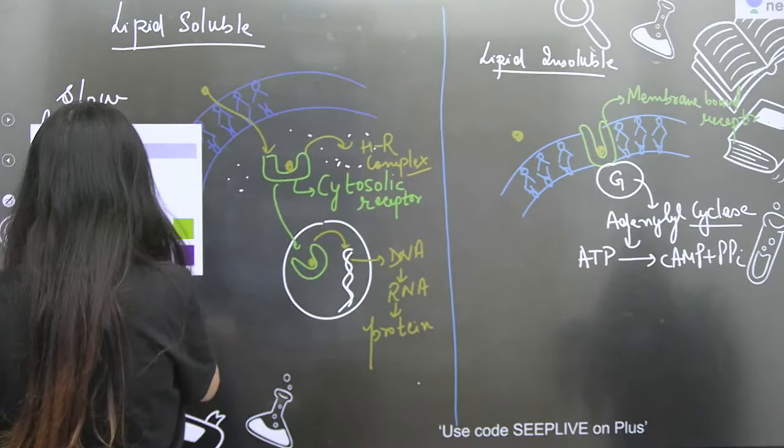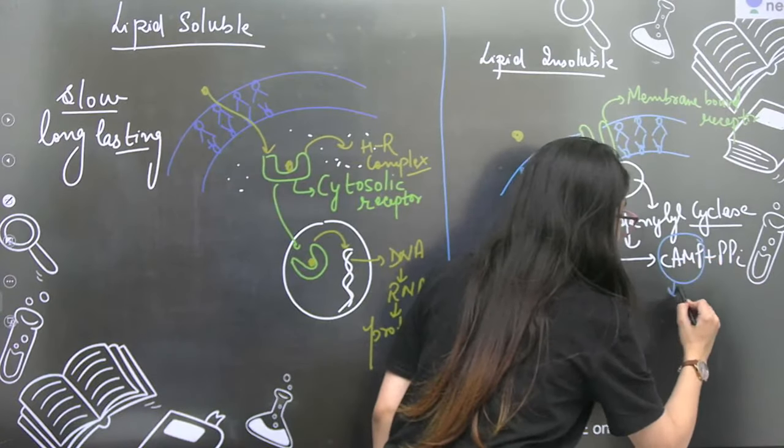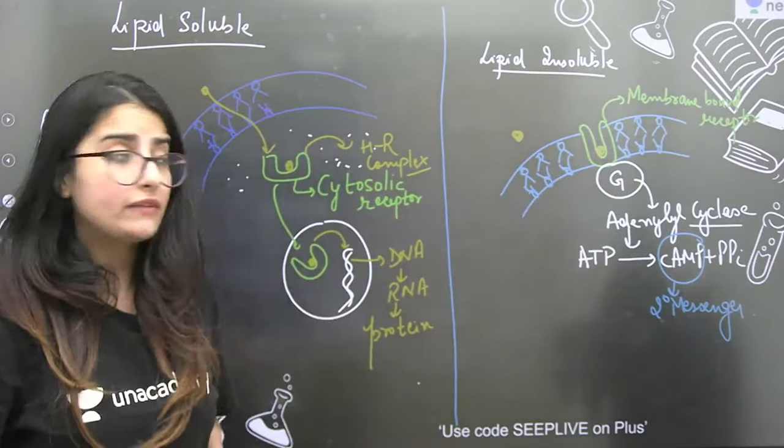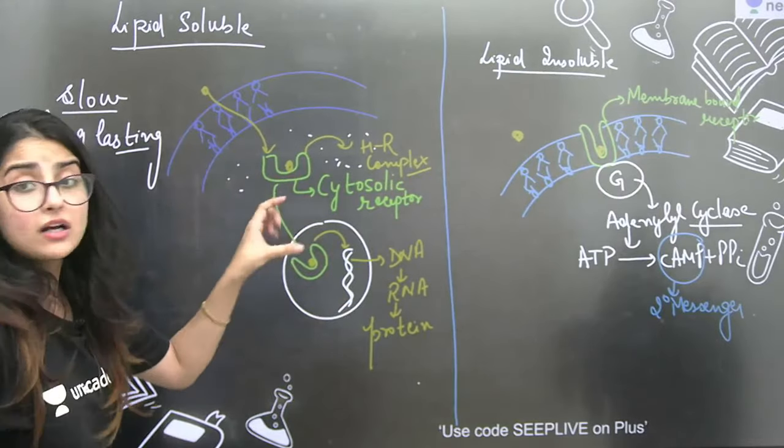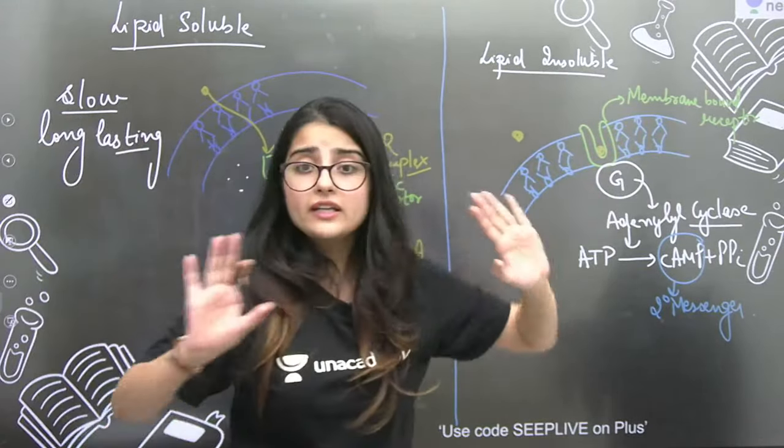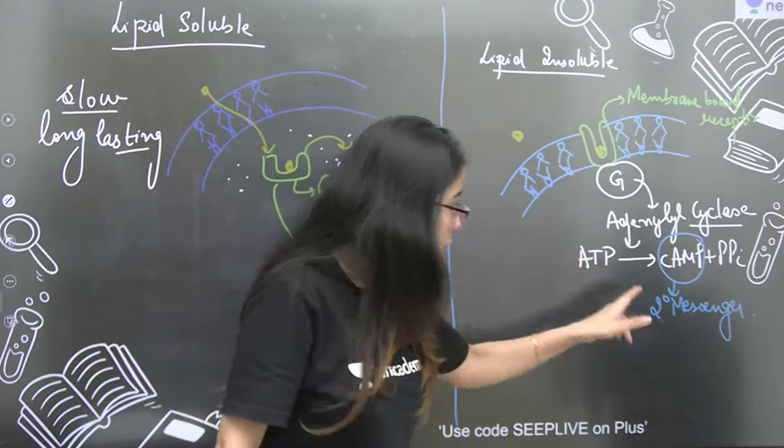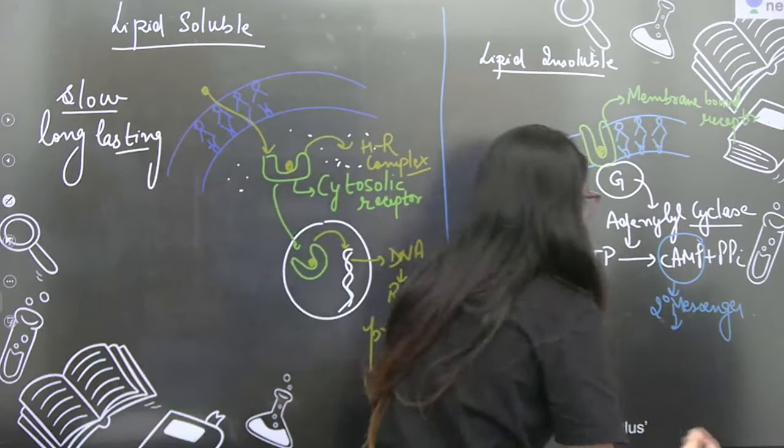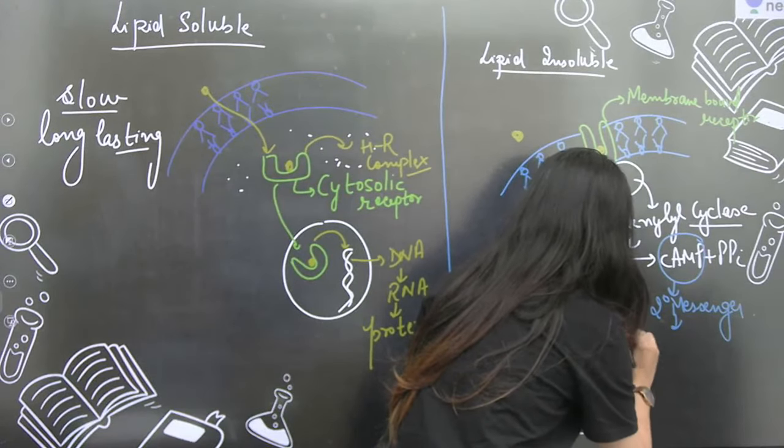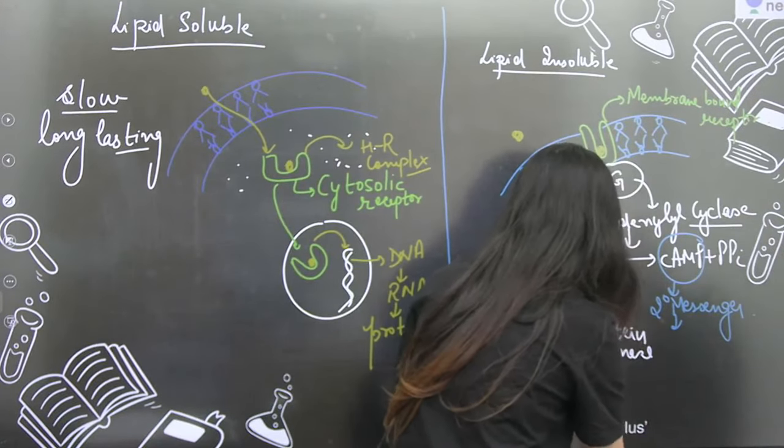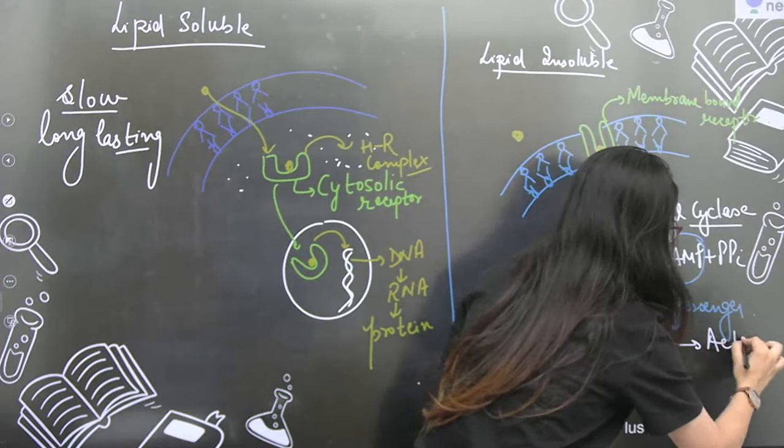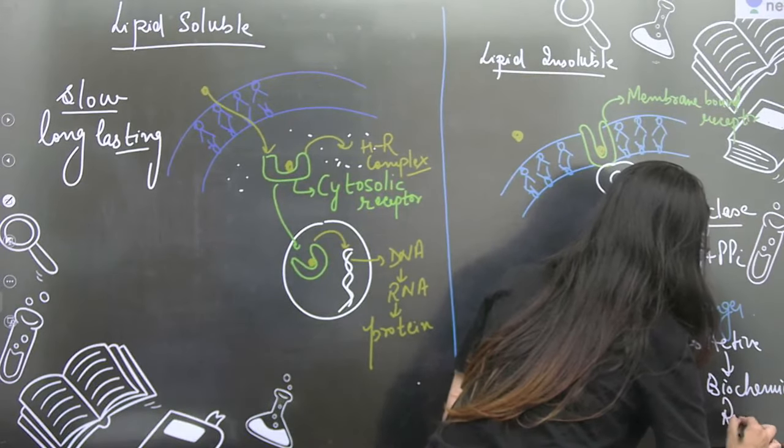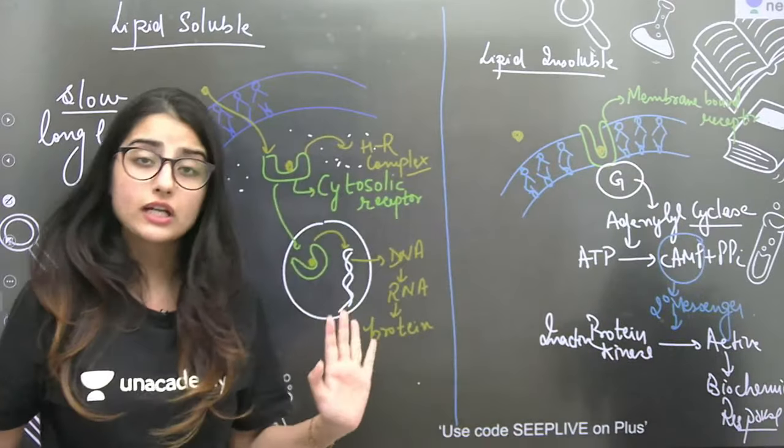This cyclic AMP is going to act as the secondary messenger. Why did it need a secondary messenger here? Why did it not take a secondary messenger there? Then this secondary messenger is going to perform the next process. The next enzyme is protein kinase, which is inactive. In the presence of cyclic AMP, it becomes active. And this active protein kinase will generate biochemical response from target cells.